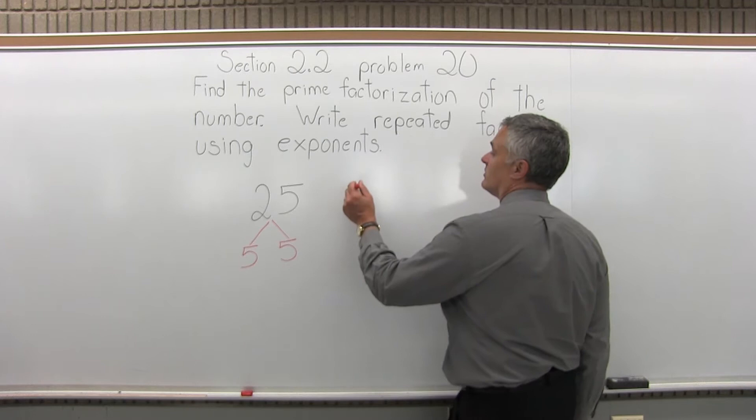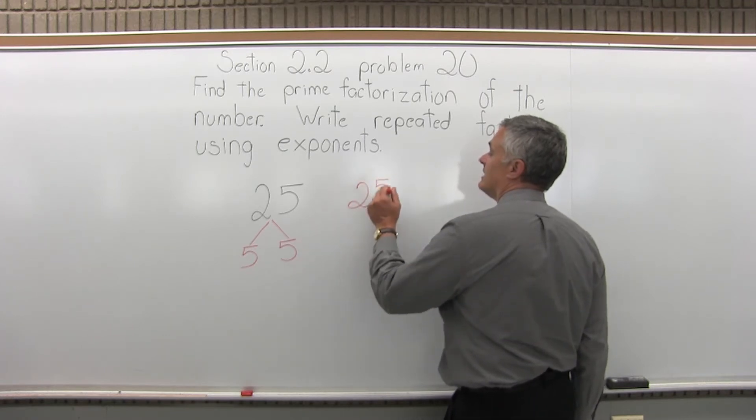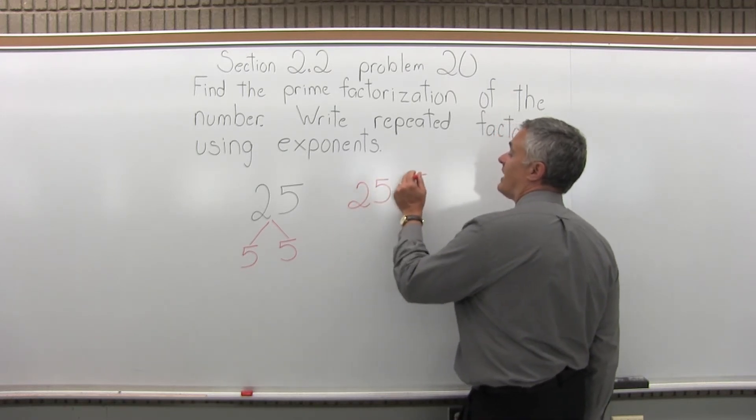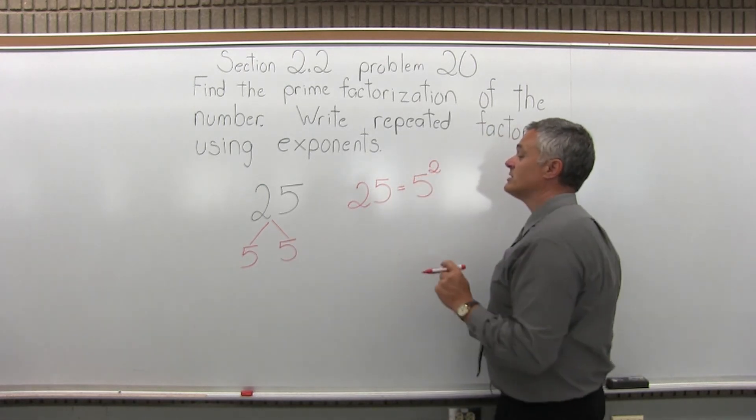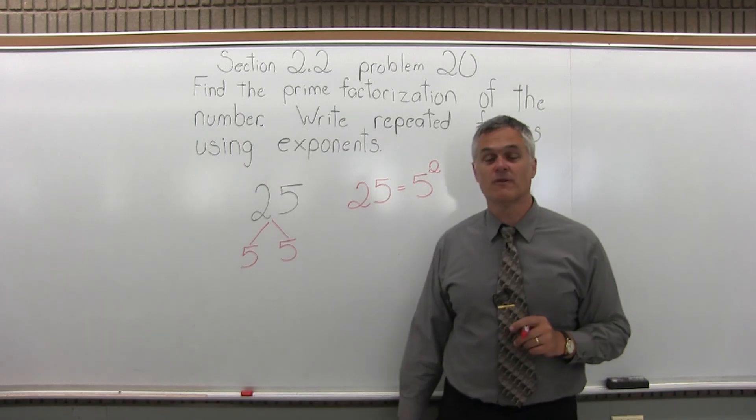So we write 25 equals, now 5 is a repeated prime, so there's two of them, I will write 5 to the second power. Those are the primes that multiply to make a 25.